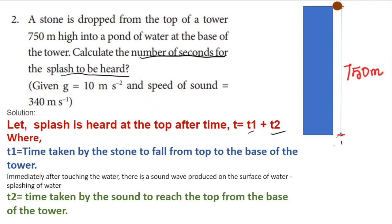A stone is dropped from the top of a tower 750 meters high into a pond of water at the base of the tower. Calculate the number of seconds for the splash to be heard. Given: g = 10 m/s² and speed of sound = 340 m/s.